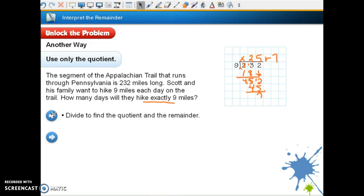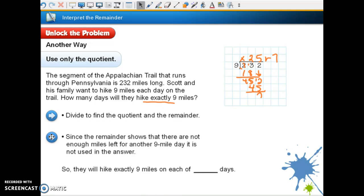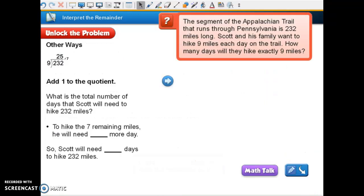Divide to find the quotient and the remainder. Since the remainder shows that there are not enough miles left for another 9-mile day, it is not used in our answer. 7 is less than 9. So it's not going to be a 9-mile hike on that last day. It's only going to be 7. So we're only going to use this part. There will be exactly 25 days that they hike 9 miles, and then they'll have to hike 7 miles on another day.